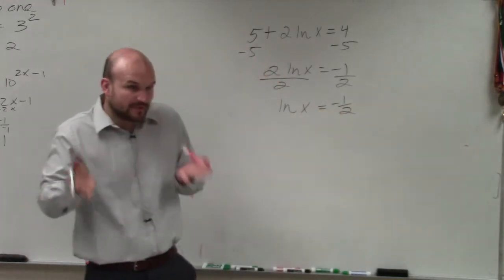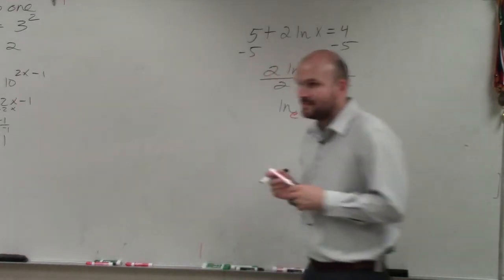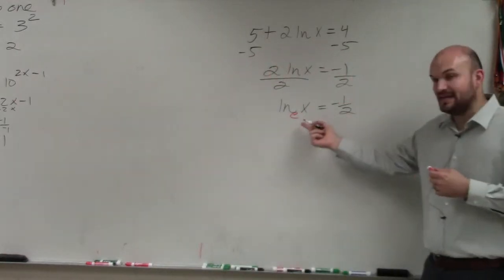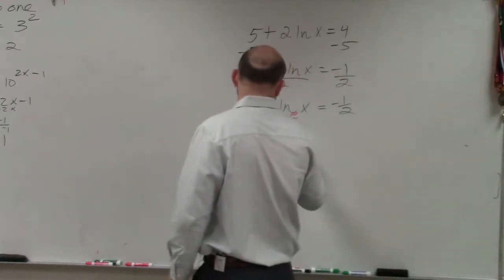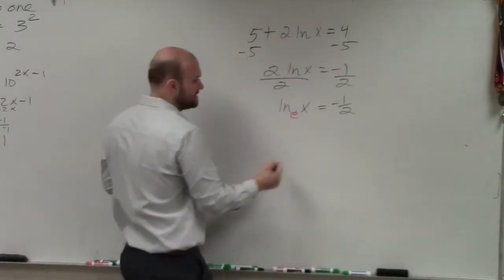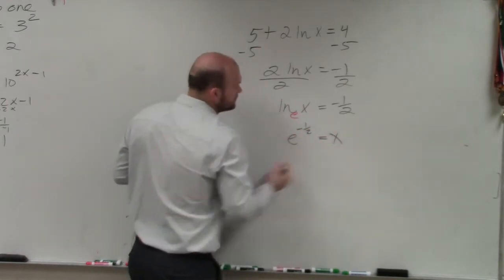Now, remember, ladies and gentlemen, we use ln because ln has a base of e. Well, since now that I have a base of e, I can rewrite this in exponential form. So I can rewrite this as, if you're going to use the arrows, e to the negative 1 half is equal to x.